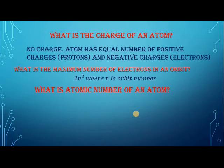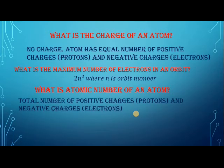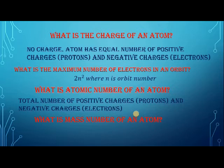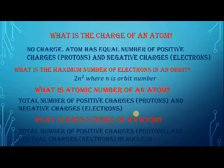What is the atomic number of an atom? The atomic number is the total number of protons in an atom, which is always equal to the number of electrons. What is the mass number of an atom? The mass number is the number of protons plus the number of neutrons in the nucleus — the positively charged protons plus the neutrally charged neutrons.